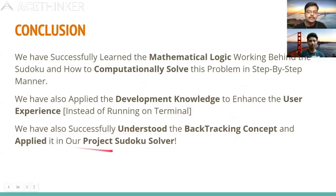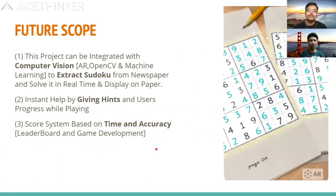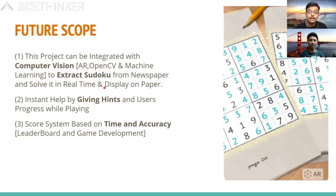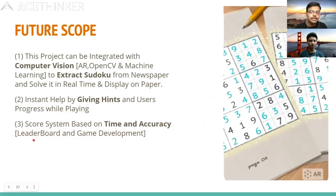Future scope includes: using AR, OpenCV, and machine learning to scan a Sudoku from a camera, extract it, solve it, and display the answer on the paper. We can also add an instant hints system that gives users number hints while playing. Additionally, a scoreboard based on time and accuracy, or a leaderboard in a game development app, could be integrated.